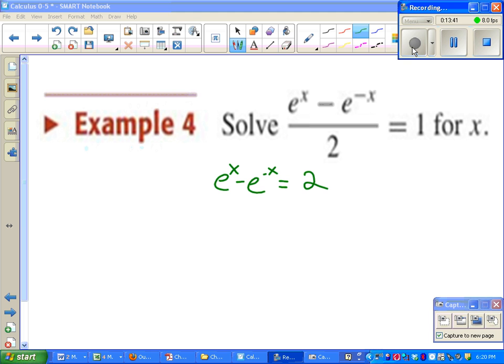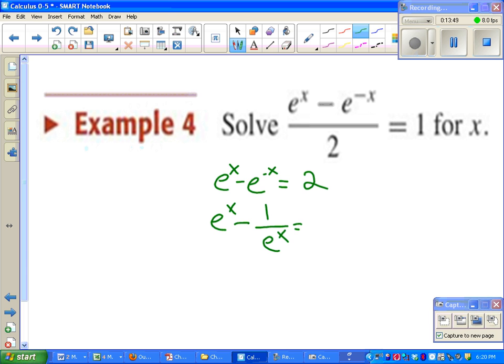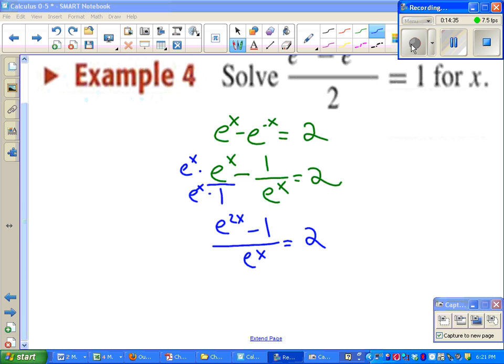If you thought, man, I sure do hate negative exponents, then you thought the same thing as me. At this point, maybe pause the video and try to think of what you would try next. If you thought, man, I sure do wish I had a common denominator, then you thought the same thing as me. And that's kind of tricky. I'm going to multiply both sides by e^x here. And we could have also just used fraction busters to get rid of the fractions as well. Either way is fine. We'd end up with something like e^(2x), not e^(x^2), minus 1/e^x = 2.